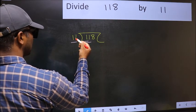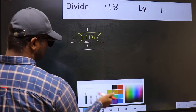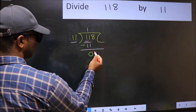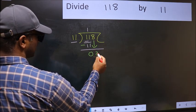When do we get 11 in the 11 table? 11 once is 11. Now you should subtract. 11 minus 11 is 0. After this, bring down the next number. So 8 down.